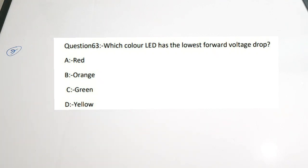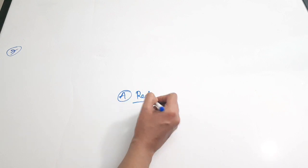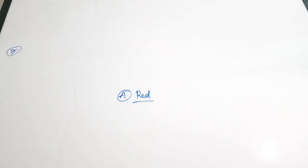Seventh question: which color LED has the lowest forward voltage drop? The color with the lowest voltage drop is red. Red color LED has the lowest voltage drop. Correct answer is option A.